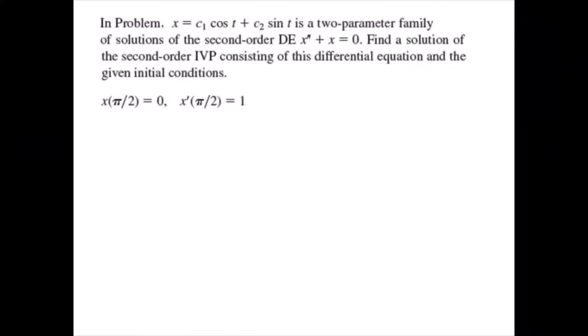In this problem, x equals c1 cosine t plus c2 sine t is a two-parameter family of solutions of the second-order differential equation x double prime plus x equals zero. Find a solution of the second-order IVP consisting of this differential equation and the given initial conditions: x of pi over 2 equals zero, and x prime of pi over 2 equals 1.